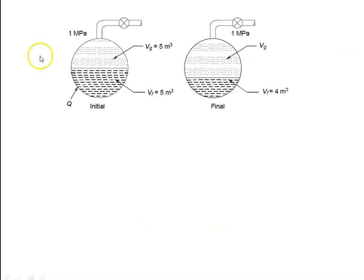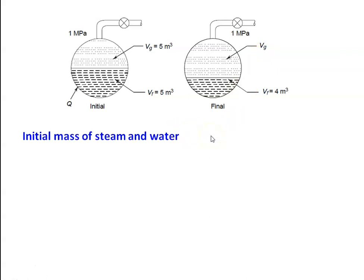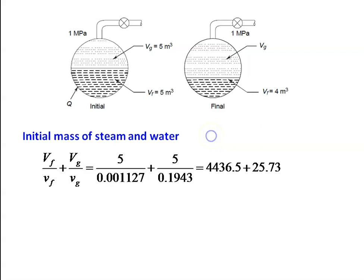This is the initial condition of the boiler: initially 5 meter cube of water and 5 meter cube of steam at pressure 1 mega Pascal. Finally, pressure is the same but water quantity is 4 meter cube and the remaining volume is vapour. Initial mass of steam and water: volume of liquid divided by specific volume of liquid plus volume of vapour divided by specific volume of vapour equals 5 divided by 0.001127 plus 5 divided by 0.1943 equal to 4436.5 plus 25.73.